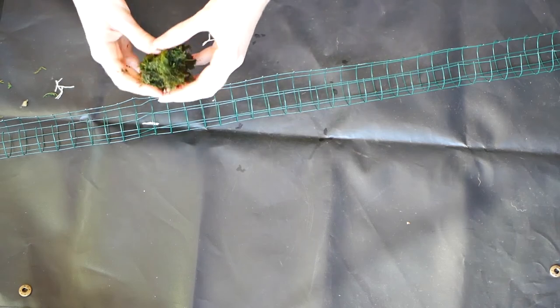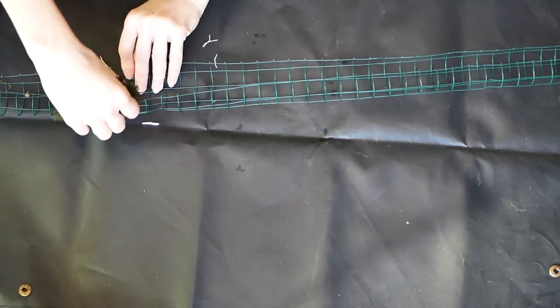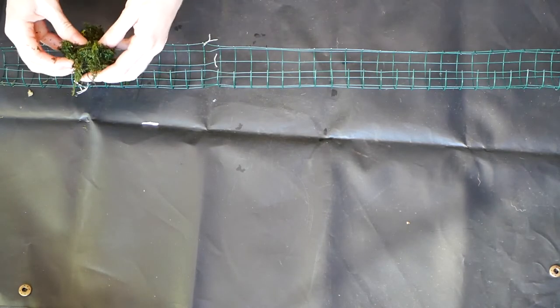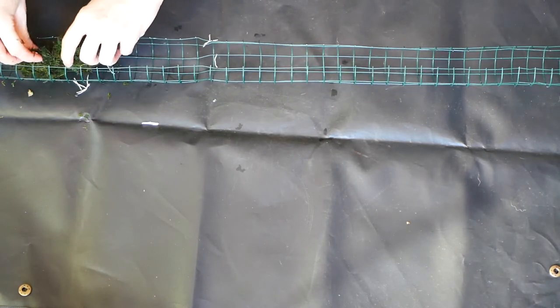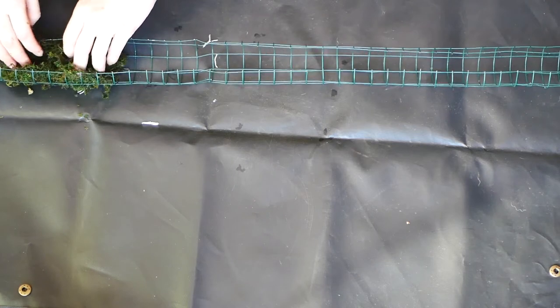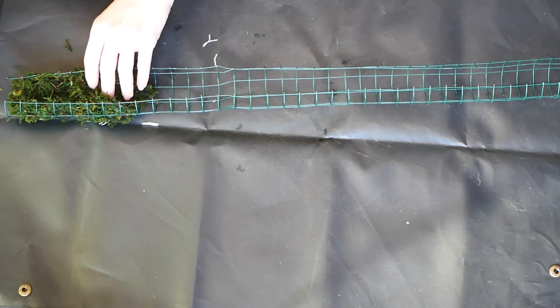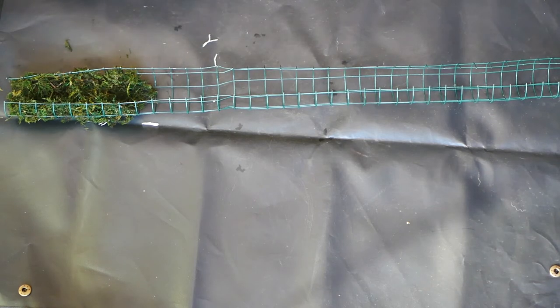I actually reused the moss pole from the last DIY moss pole video so the plastic coated garden mesh was already shaped to the right shape and I just added the sphagnum moss.